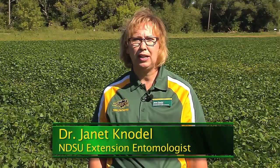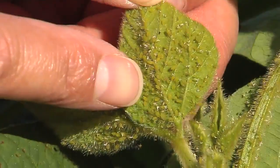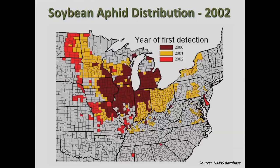Soybean aphid was introduced into the United States in 2000, and it quickly spread throughout the north-central soybean producing states.